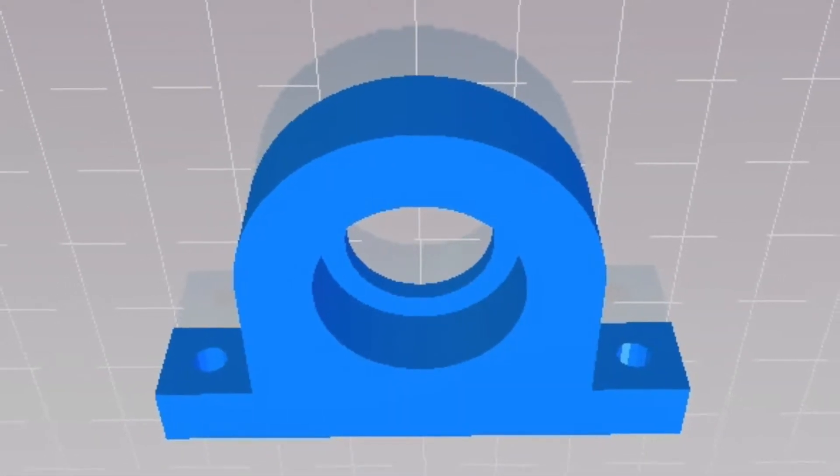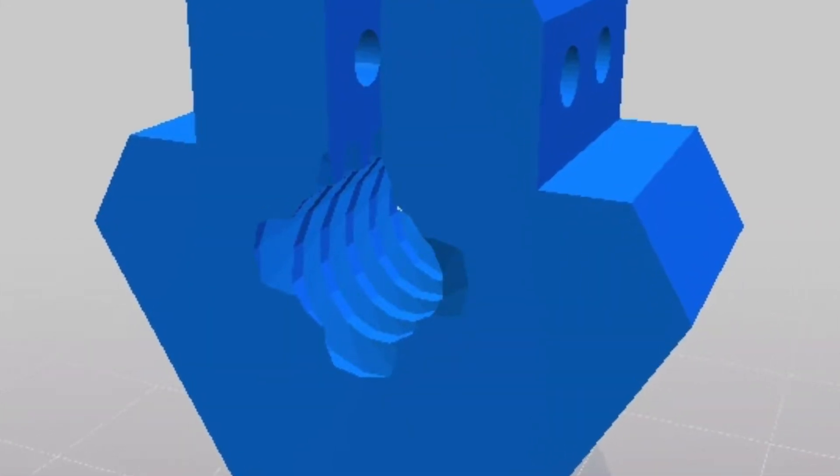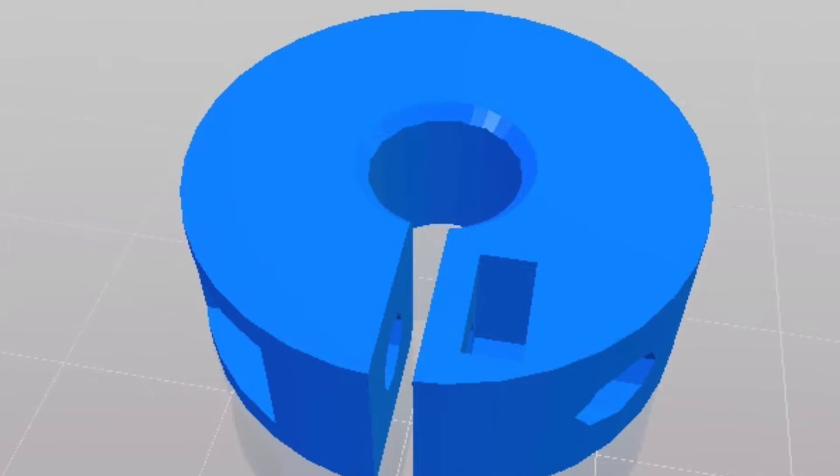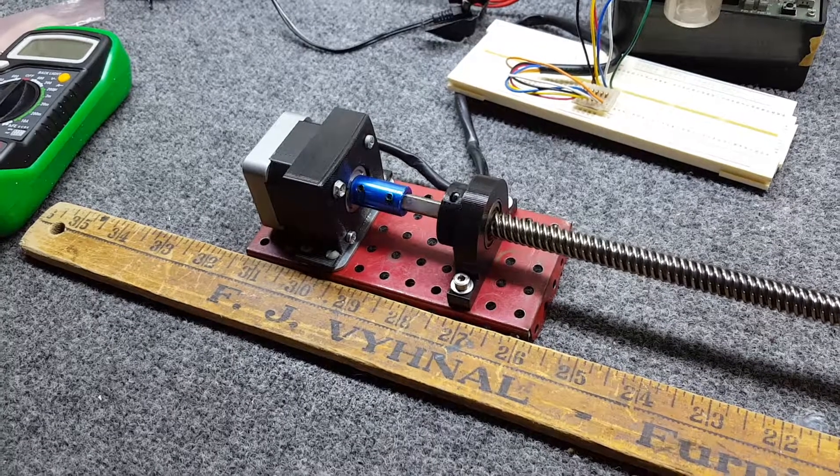This is also the pillow block that I'm using, 3D printed as well. The four-star Acme screw nut and the locking collar which was also 3D printed. So here are all those parts together.